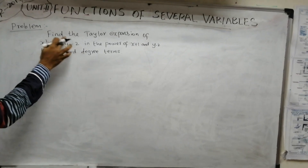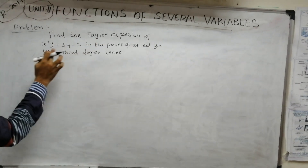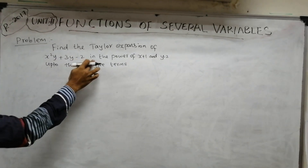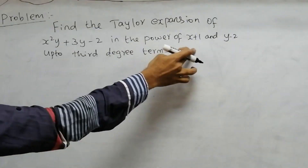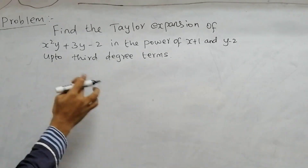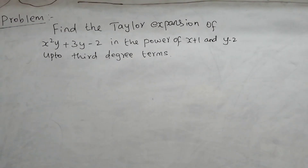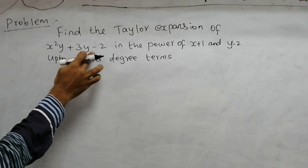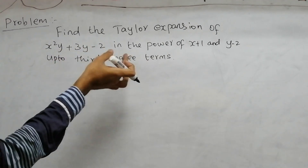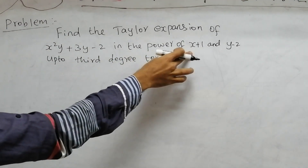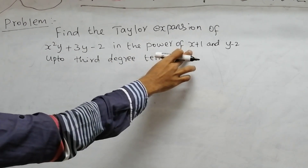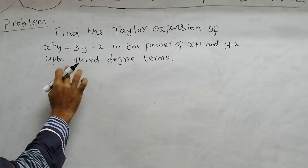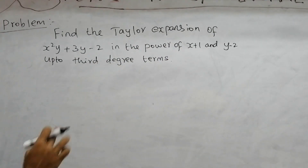Find the Taylor expansion of x squared y plus 3y minus 2, in powers of (x plus 1) and (y minus 2), up to the third degree terms.